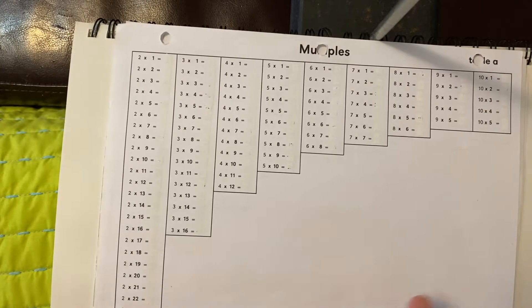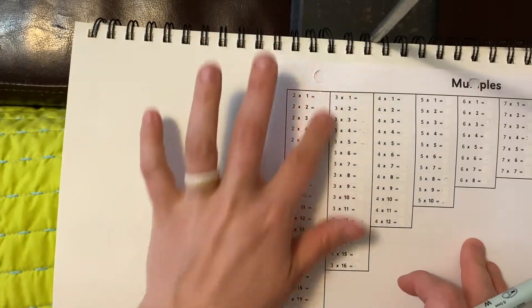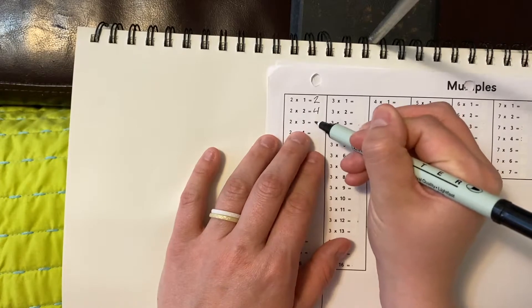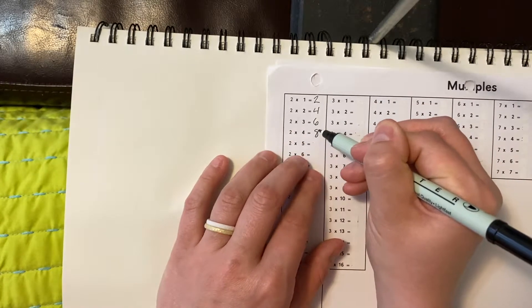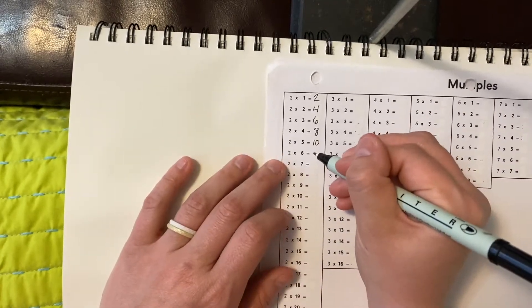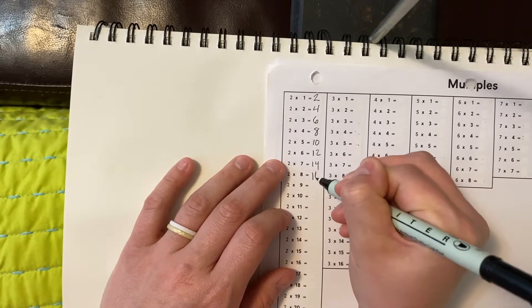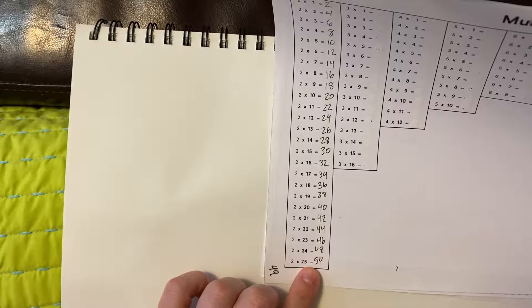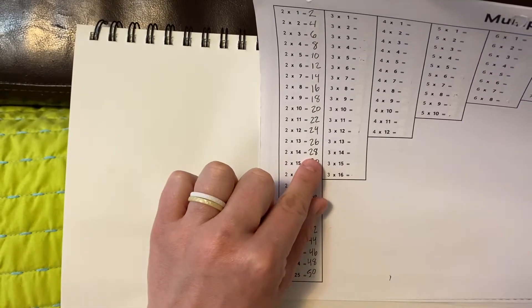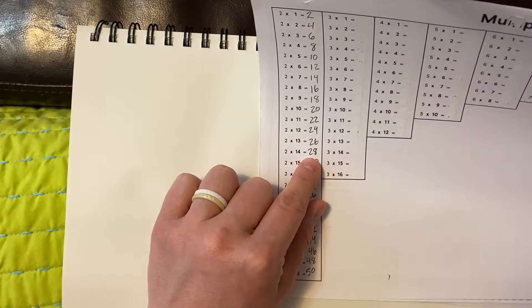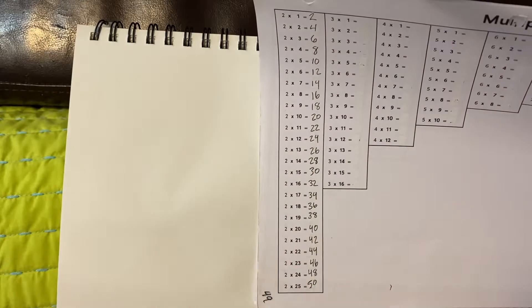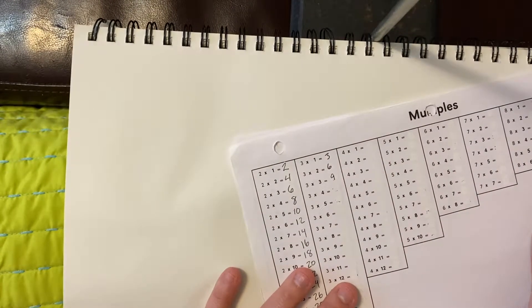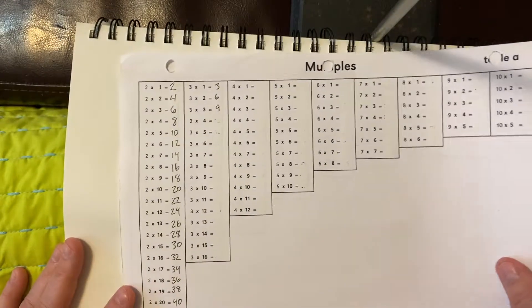This is pretty self-explanatory. This is just writing down your math facts. All of our answers here are going to be multiples. So we would do 2 times 1 is 2, 2 times 2 is 4, 2 times 3 is 6, 2 times 4 is 8, 2 times 5 is 10, 2 times 6 is 12, and all the way down. Then you'll move on to the threes.